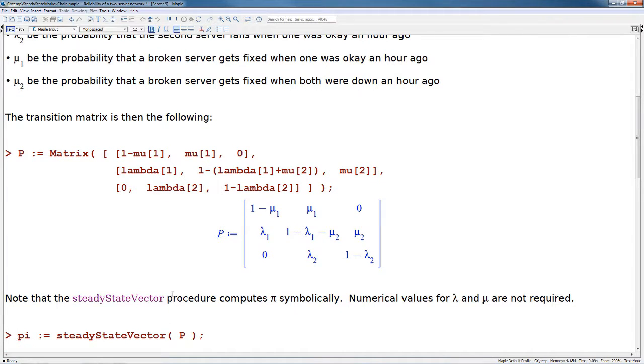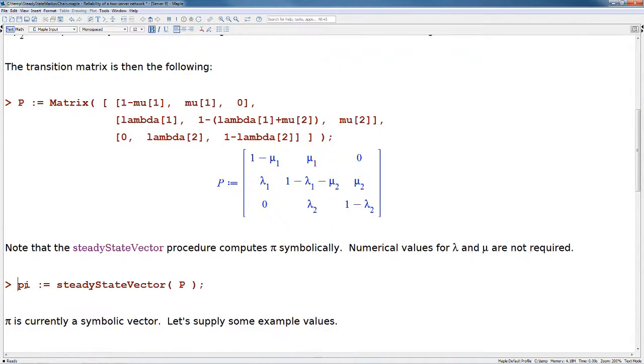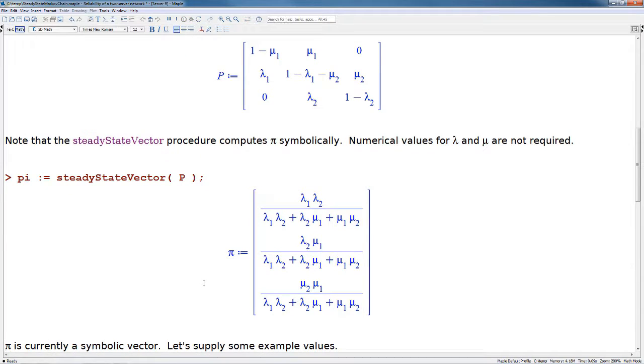Note that the steadyStateVector procedure computes pi symbolically. Numeric values of lambda and mu are not required. If I declare pi as steadyStateVector(P), this will return a symbolic result for us.